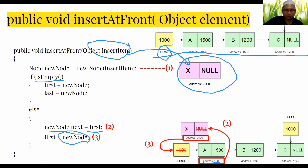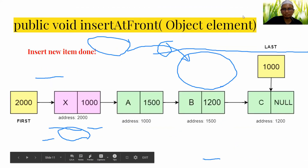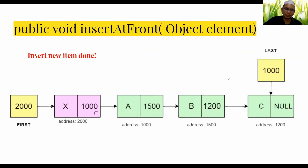The first pointer is updated to point to the new node. Now the new node becomes the first node and links to the second node, which was previously the first. As a result, first points to the new node containing x.